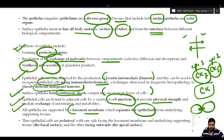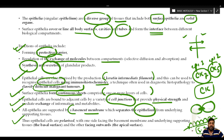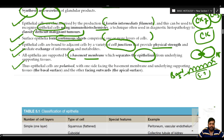All epithelia are supported by a basement membrane which separates the epithelium from the underlying supporting tissue. The epithelial cells are therefore polarized — the surface facing the basement membrane and supporting tissue is called the basal surface, while the surface away from the basement membrane is called the apical surface. This polarity is a key characteristic of epithelial cells.